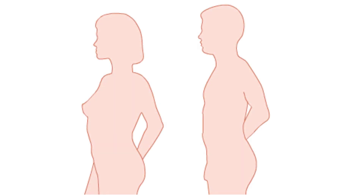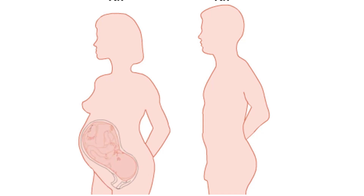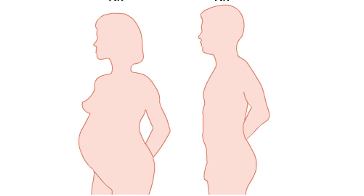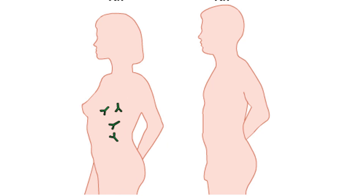Complications can arise if an Rh negative woman is impregnated by an Rh positive man. The fetus may be Rh positive. During childbirth, some of the fetal Rh positive cells may leak into the maternal bloodstream. The woman's immune system views the Rh positive as foreign and makes antibodies against it.